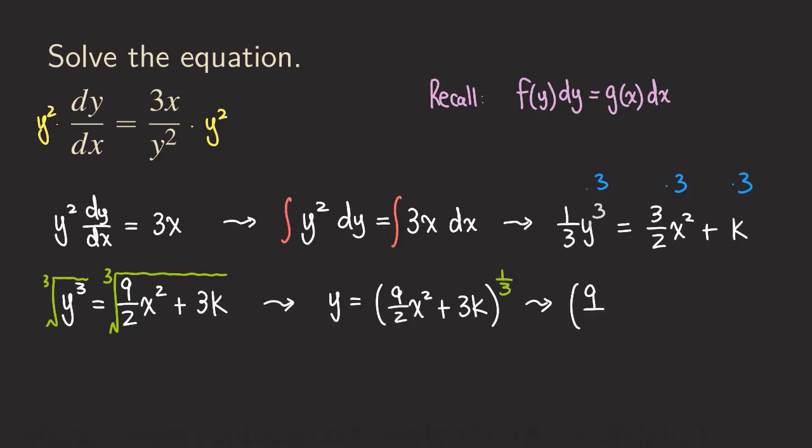So we get y equals (9/2 x² + C)^(1/3), where C equals 3k, so you know there are different constants. That's it for this problem. Thank you for watching. I'll see you next time.